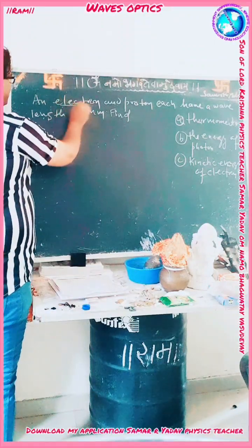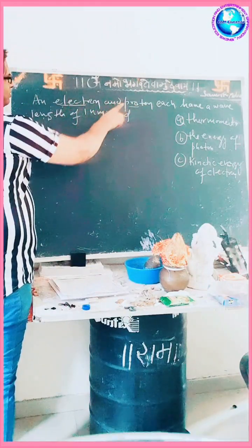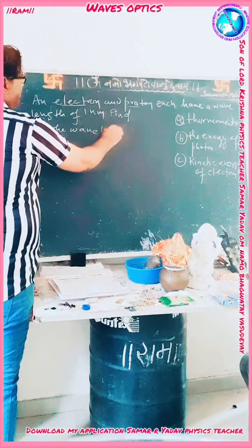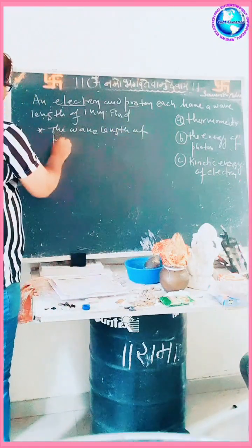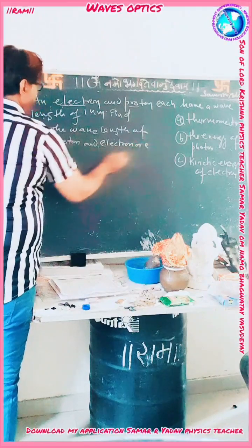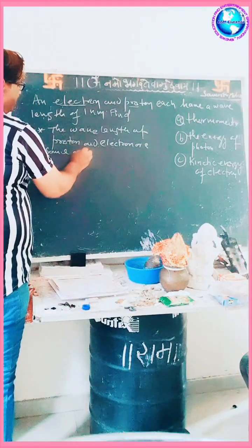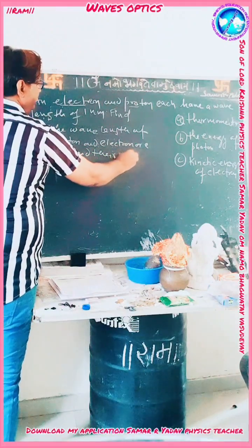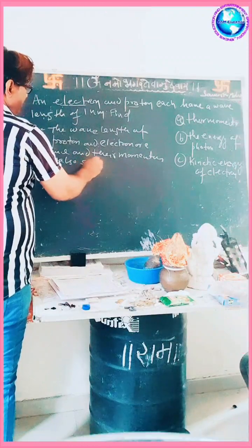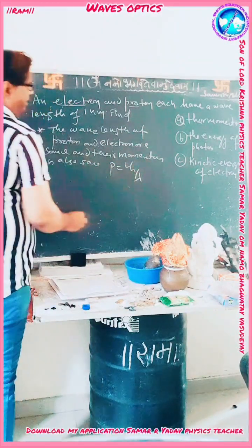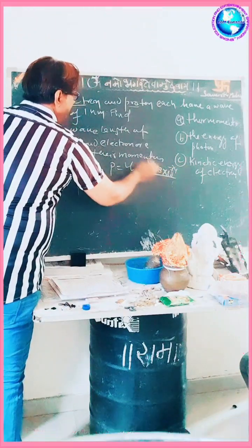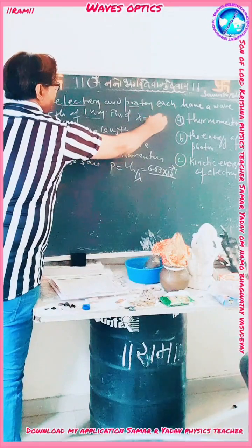The wavelengths of the electron and photon are the same, and their momenta are also the same. The momentum is given by p = h/λ, where h is 6.63 × 10⁻³⁴, and lambda is 1 nanometer, equal to 1 × 10⁻⁹ meter.